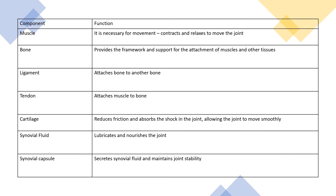It's important to understand the function of each component of a synovial joint. Muscles enable movement — muscles work in pairs: one contracts while the other relaxes, so the bicep contracts while the tricep relaxes, allowing movement. Bone provides a framework and support for the attachment of muscles and other tissues. Ligaments attach bone to another bone — it's crucial to understand the difference: a ligament attaches bone to bone, while a tendon attaches muscle to bone. Cartilage reduces friction and absorbs shock. Synovial fluid lubricates and nourishes the joint.